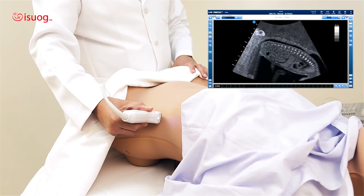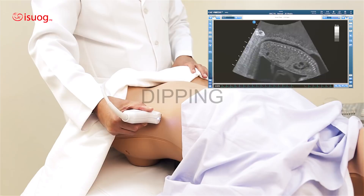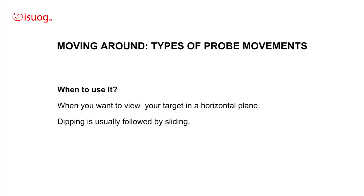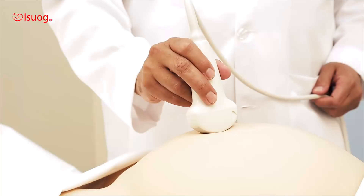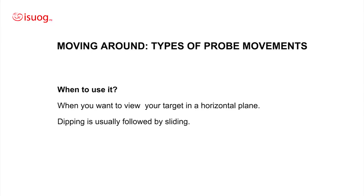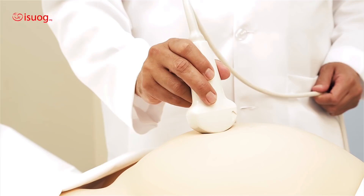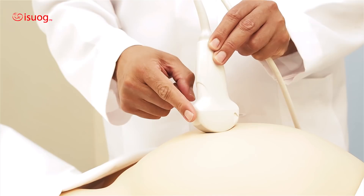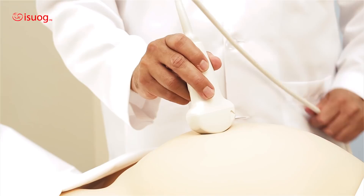The next movement is dipping. We use dipping when we want to view our target in a horizontal plane. Dipping is usually followed by sliding on the narrow. I will show you how we do dipping — dipping is leaning on the narrow aspect of the probe. I could dip on this side or on the other side. This movement is dipping.